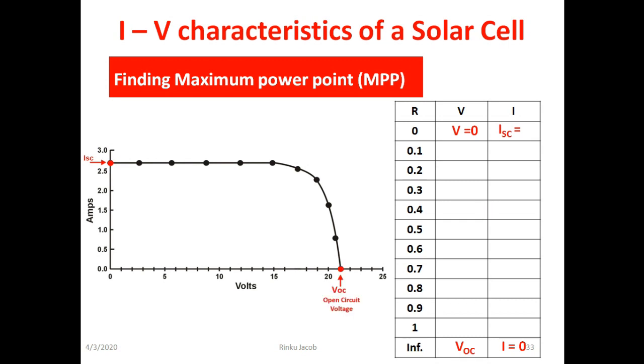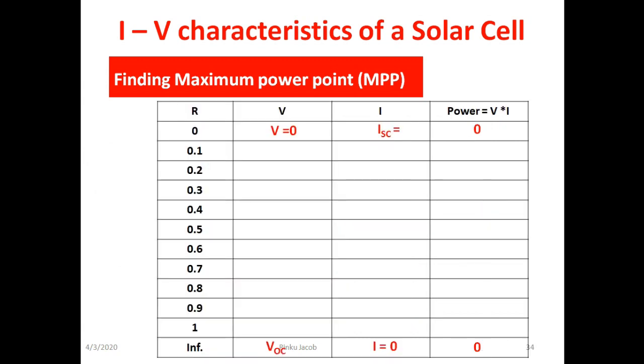Now to find the maximum power delivering condition we add one more column to the tabular column. In the power column we can see for resistance values zero and infinity the power delivered to the load is zero. For other values of resistances there is some value of power delivered. From this tabular column we find the maximum power delivered. Suppose it is for 0.6 ohm then the voltage and current values for this maximum power is denoted by Vmax and Imax. The maximum power is denoted by Pmax.